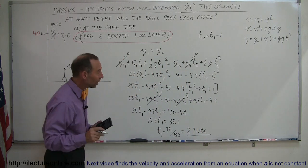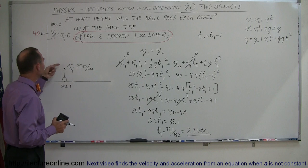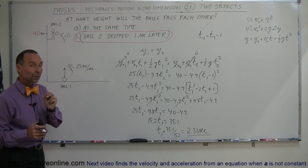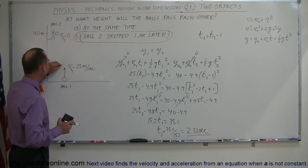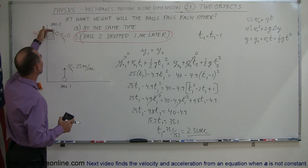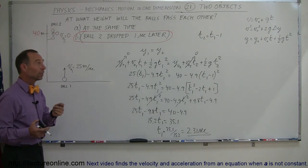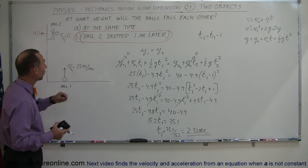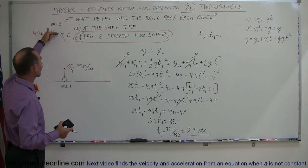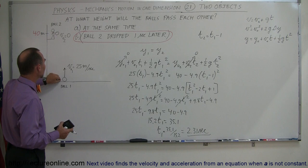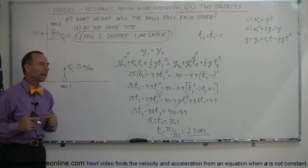So what does that mean? T1 is a time when ball one leaves the ground, so 2.31 seconds after ball one is thrown up, it meets the ball coming down from the height of 40 meters. Another way of looking at it, since t2 is 1 second less, 1.31 seconds after this ball is dropped, it will meet up with the ball coming from below. That's when they will pass one another.